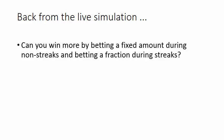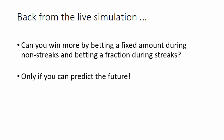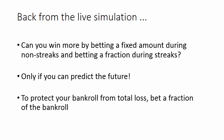You might wonder: can you win more by betting a fixed amount during non-streaks and betting a fraction of your bankroll during streaks? Yes, but only if you can predict the future. Each coin flip is independent of all previous coin flips. There's no way of knowing whether the next flip is going to reverse a trend or start a new trend — it's totally unpredictable. So to protect your bankroll from total loss, you should bet a fraction of the bankroll.